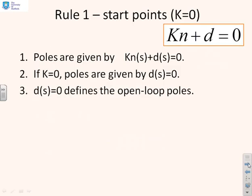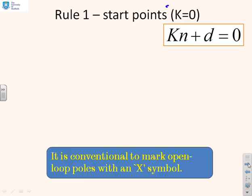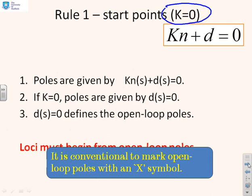Rule one: how can I work out where the root loci start? That is, where are the closed-loop poles if K equals zero?